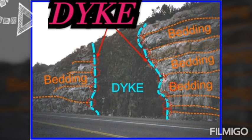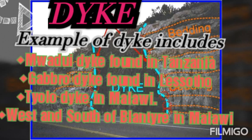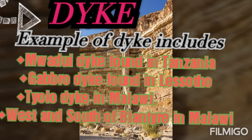Examples of dikes in a geographic area include the Madui dike found in Tanzania near the south river, and the Gap dike found in the south. There are several dikes in Malawi in the west and south of Praten in Malawi. The real structure of the dike is shown in the diagram indicated.